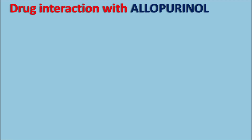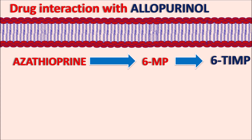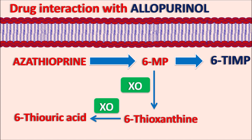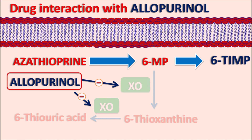An important drug interaction occurs with allopurinol. 6-mercaptopurine is metabolized to 6-thioxanthine and then to 6-thiouric acid by xanthine oxidase. Allopurinol, an anti-gout drug and xanthine oxidase inhibitor, blocks this inactivation pathway when combined with azathioprine, inhibiting the metabolism of azathioprine and increasing its toxicity, leading to bone marrow depression.